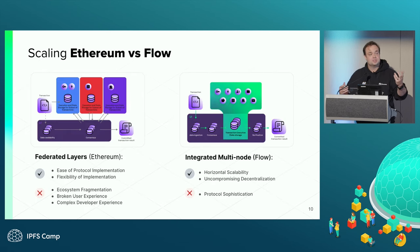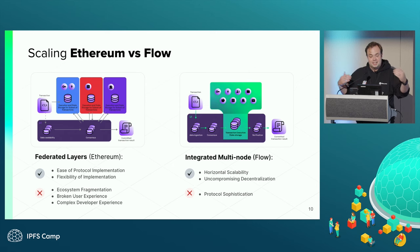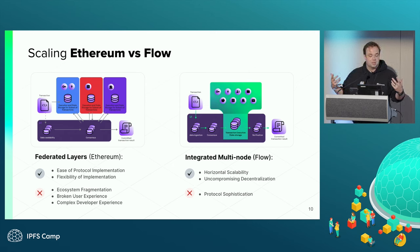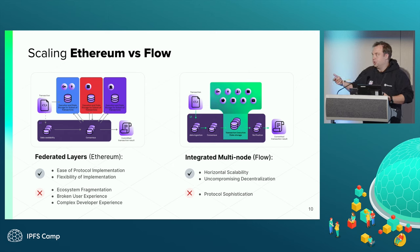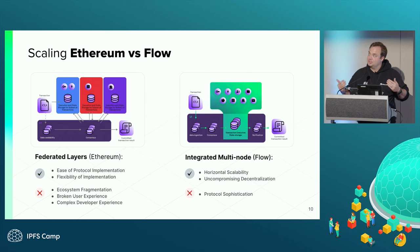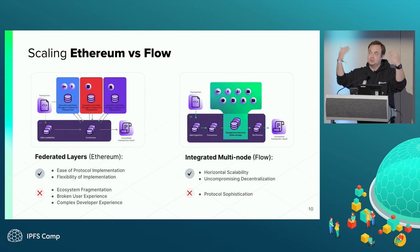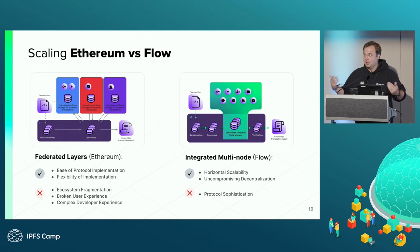Looking at the differences between Ethereum's layer two solution and Flow's integrated multi-node solution: for every layer two added, it may have different applications and functionality, but as an app developer you have to sacrifice and pick which to use. You also have to select a network that can handle your scale and hope you don't overwhelm it — many are having to find a new home today. Flow, on the other hand, has those same primitives, but fully integrated as a complete VM for anyone to use.